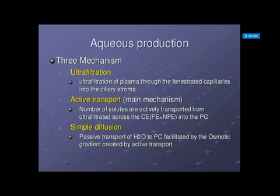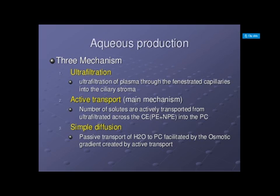Aqueous humor production occurs via three mechanisms. First is ultrafiltration of plasma through the fenestrated capillaries into the ciliary stroma. The second mechanism is active transport, which is the main mechanism — a number of solutes are actively transported from ultrafiltration across the ciliary epithelium, both pigmented and non-pigmented, into the posterior chamber. The third mechanism is simple diffusion.